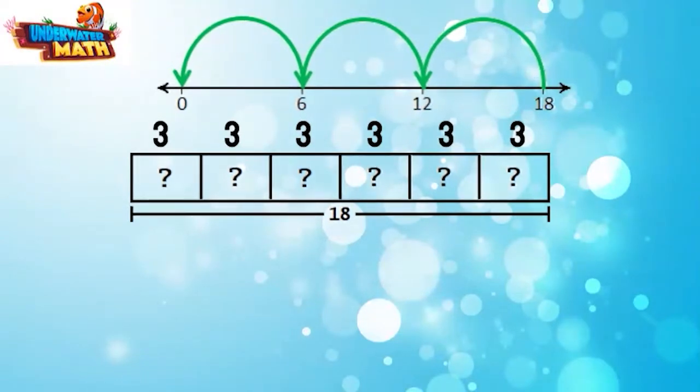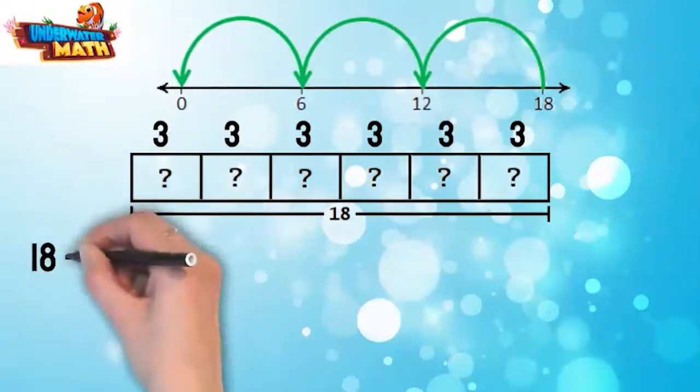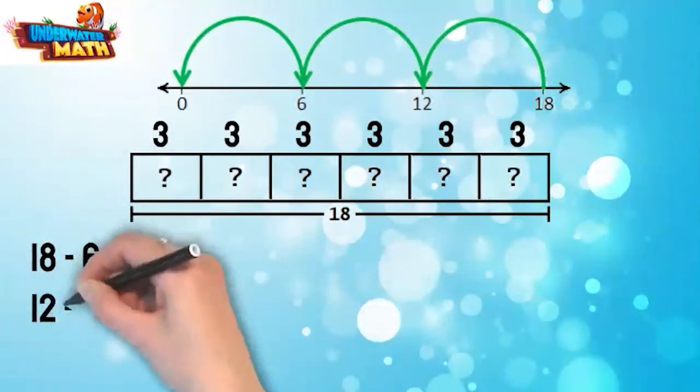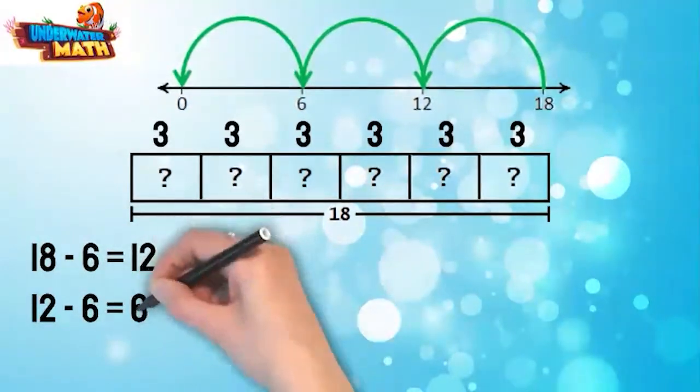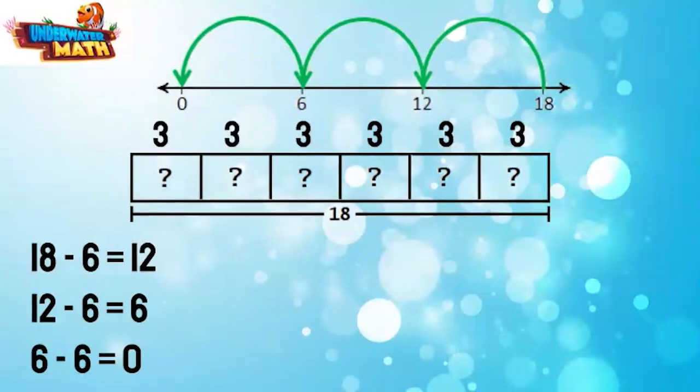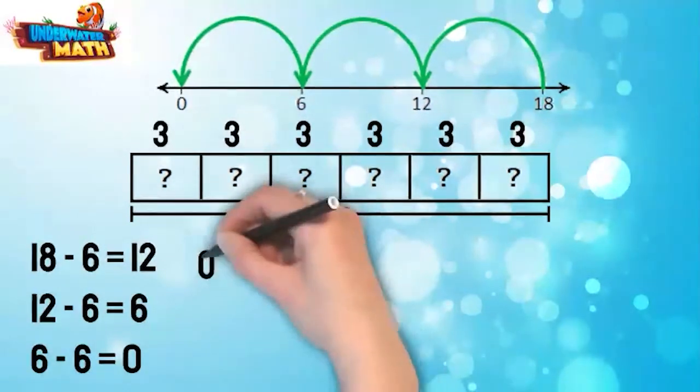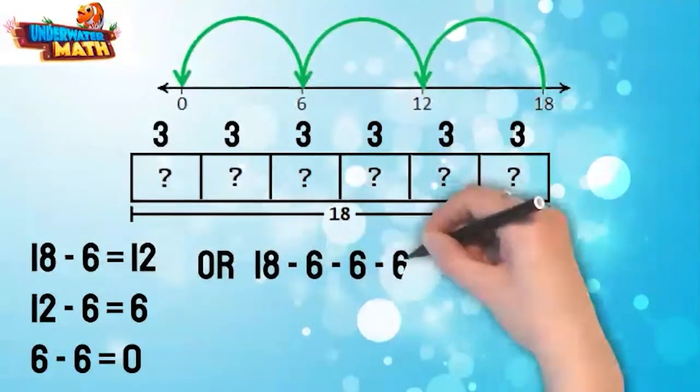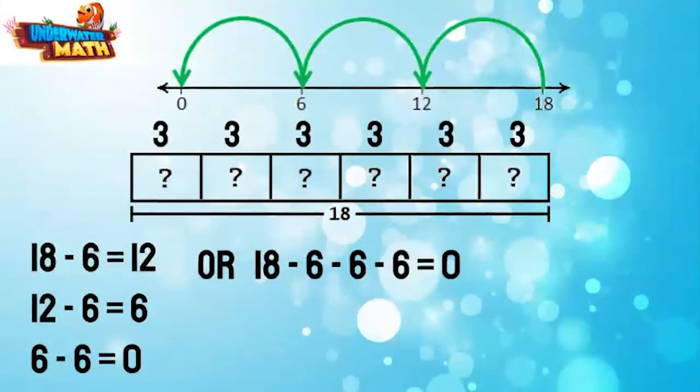I can also use repeated subtraction to find the number of students per dormitory. I will just subtract the number of dormitories from 18 repeatedly until I get to zero. The number of times I need to subtract it to get to zero is the number of students I can place in each dormitory. 18 minus 6 minus 6 minus 6 equals 0. I subtracted three times, so there can be three students in each dormitory. That's all well and good with small numbers like these.